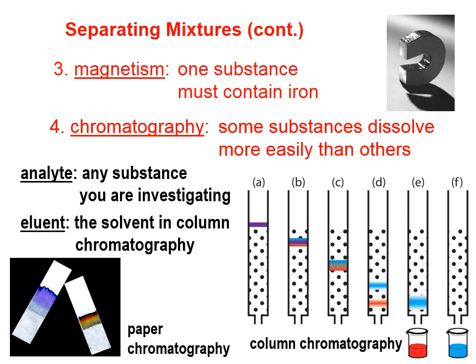Eluent is the solvent in chromatography — that's another key vocabulary term that, if you're taking AP chemistry, you really need to memorize. The eluent is the solvent that is flowing through this column that allows us to separate the mixture.